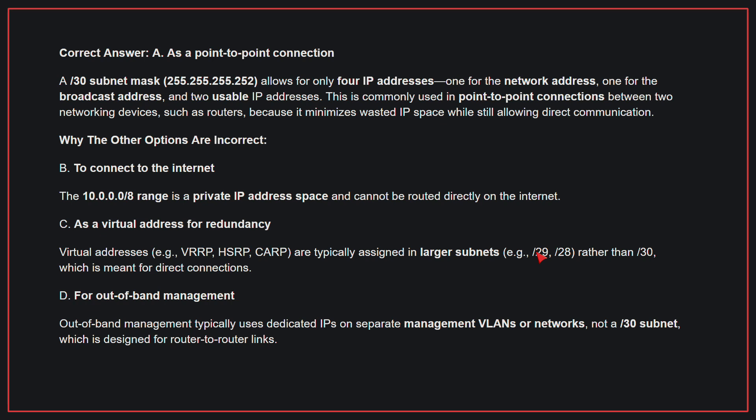Why the other options are incorrect: B, to connect to the internet. The 10.0.0.0/8 range is a private IP address space and cannot be routed directly on the internet. C, as a virtual address for redundancy. Virtual addresses are typically assigned in larger subnets rather than /30, which is meant for direct connections. D, for out-of-band management. Out-of-band management typically uses dedicated IPs on separate management VLANs or networks, not a /30 subnet, which is designed for router-to-router links. Therefore, the correct answer is A: as a point-to-point connection.